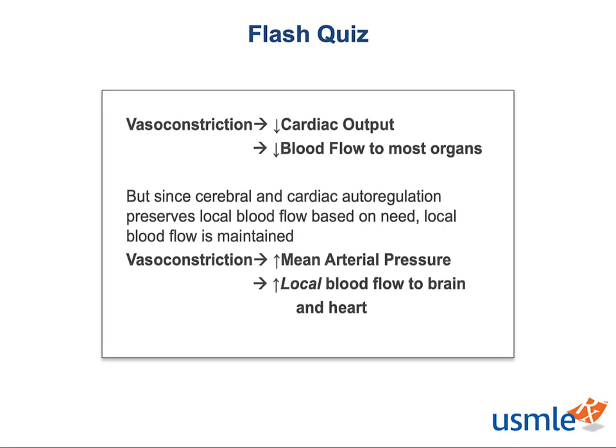The way vasopressors cause ischemia isn't hard to understand. Vasoconstriction, by increasing the vascular resistance, decreases the cardiac output and decreases blood flow to most organs. But the heart and brain are able to counteract the effect of systemic vasoconstrictors when their metabolic demands aren't being met. So while the total peripheral resistance is increased, blood flow to the heart and brain is maintained. And because the blood pressure increases, the brain and heart will actually experience increased blood flow because of the increased resistance in vascular beds in the rest of the body.